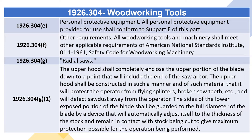1926.304(e) Personal Protective Equipment: All personal protective equipment provided for use shall conform to subpart E of this part. 1926.304(f) Other Requirements: All woodworking tools and machinery shall meet other applicable requirements of American National Standards Institute, January 1, 1961, Safety Code for Woodworking Machinery.